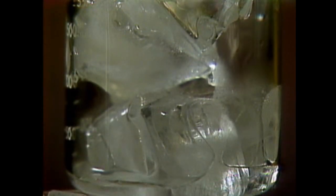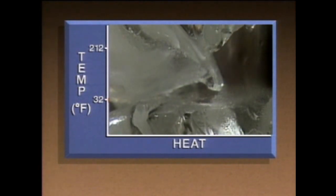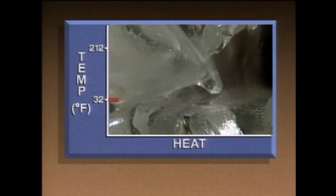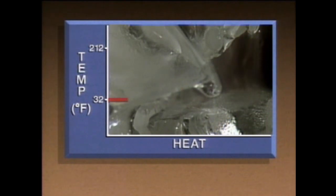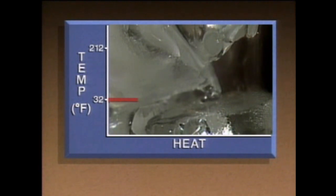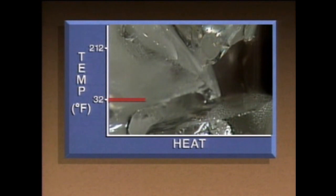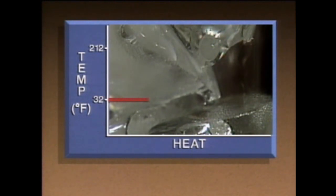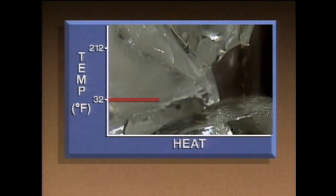We'll heat a beaker of ice to demonstrate phase changes and latent heat transfer, and use a graph to show the relationship between temperature and heat. The ice is melting, but at first the temperature stays at 32 degrees Fahrenheit. Latent heat is being absorbed by the ice, causing the molecules of ice to overcome the molecular forces holding them together, so the molecules move freely as a liquid. But as yet there is no temperature change — only a phase change from solid to liquid.